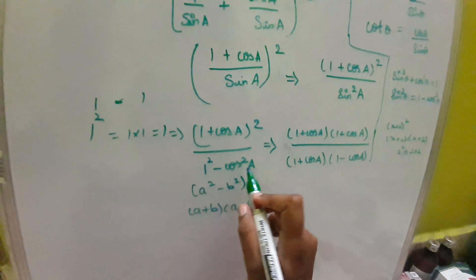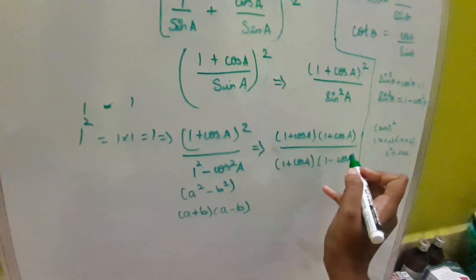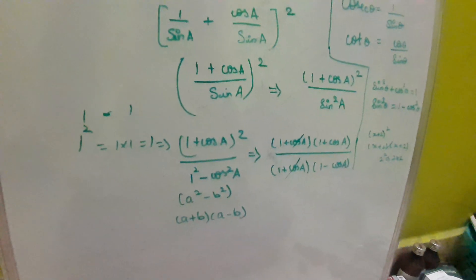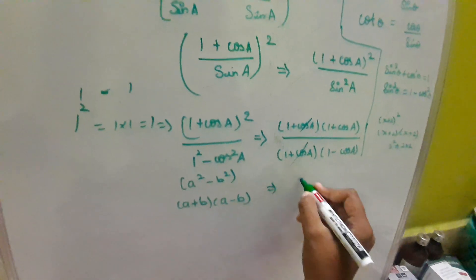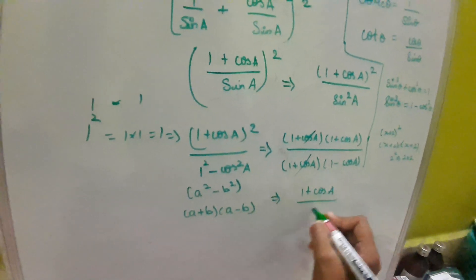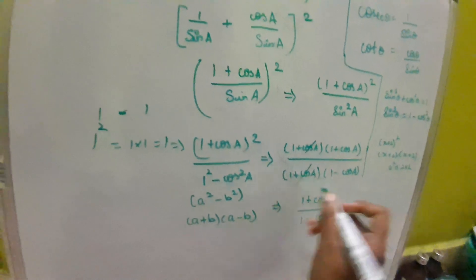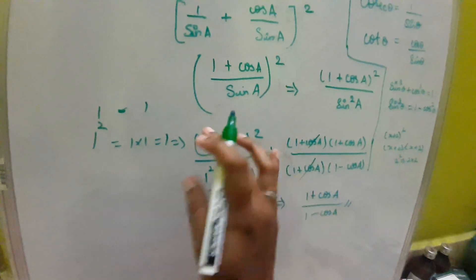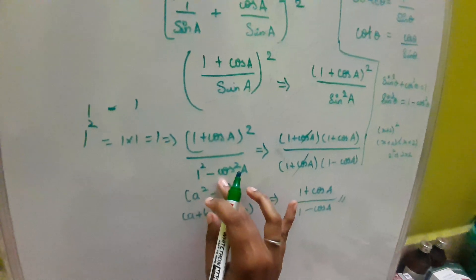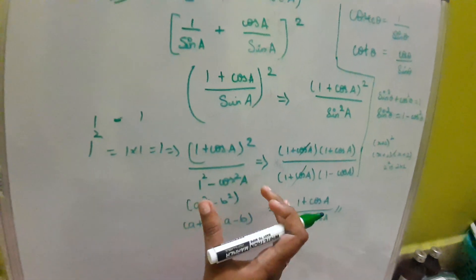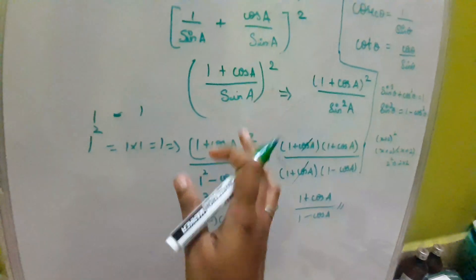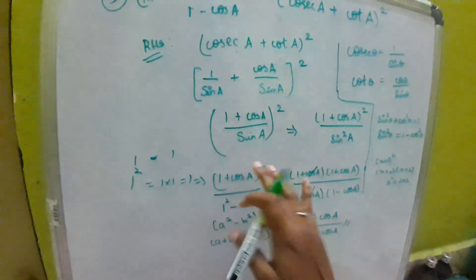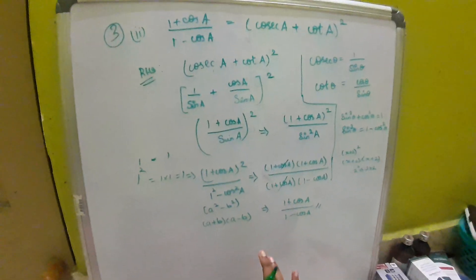Now we can cancel the similar terms: 1 plus cos A in the numerator and denominator cancels, leaving 1 plus cos A divided by 1 minus cos A. In trigonometry, you need to approach all sides — seeing the denominator and numerator, you need to imagine whether the substitution will give the correct output required by the question.